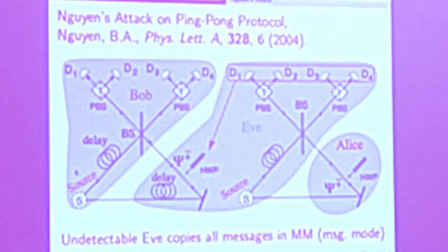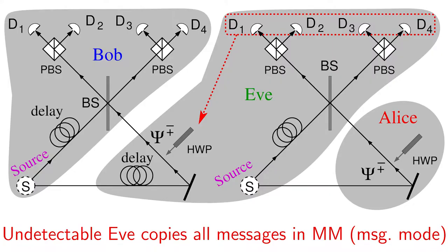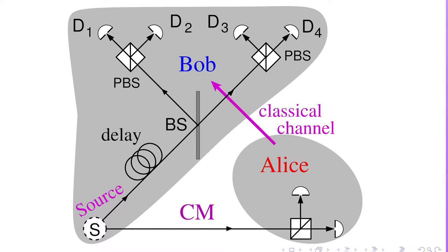That means an undetectable Eve can copy all the messages in the message mode. Of course, when we look at the control mode, there is a possibility to catch Eve, but in the message mode there is not.